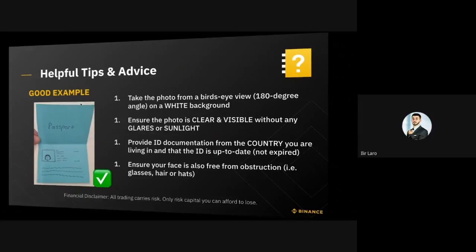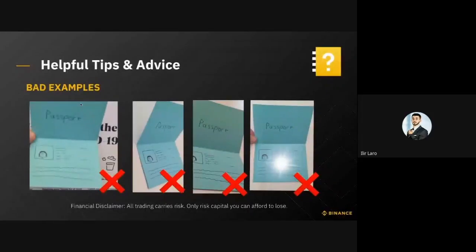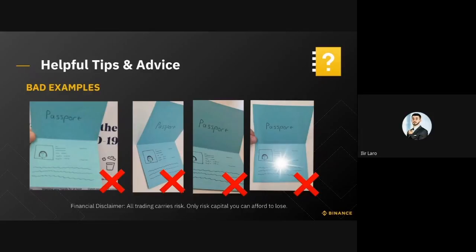Those are the good examples. Now let me briefly touch on some of the bad examples. In the first example, you can clearly see that the photo is blurred and there is some lettering behind the documentation — this wouldn't be accepted. In the second example, although you can clearly see the lettering, the angle of the passport is not at a 180-degree angle, so this would not be accepted either.